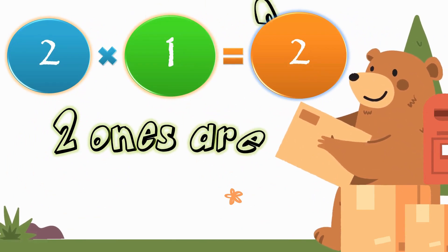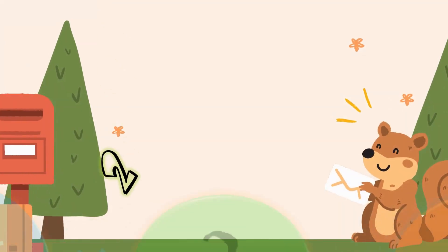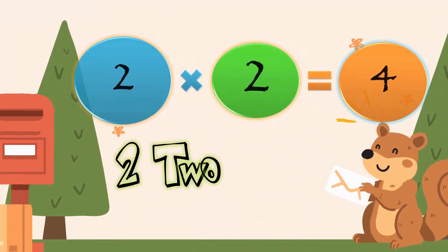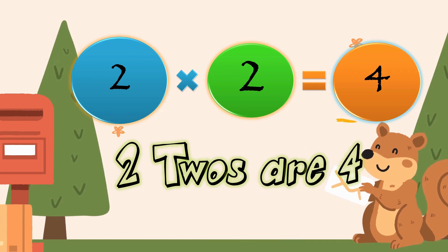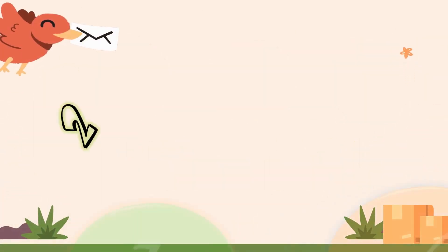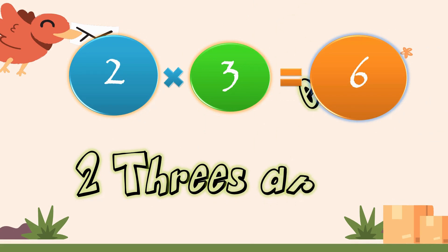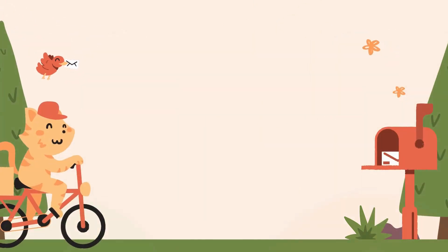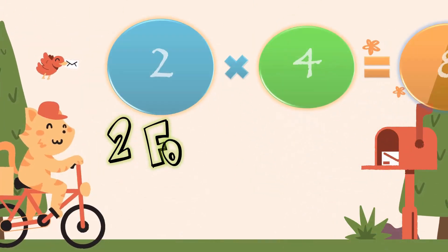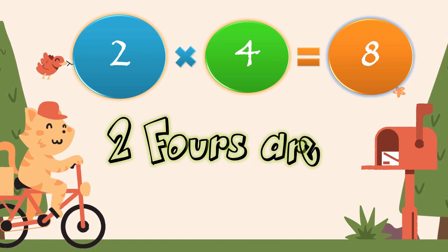Two ones are two. Two twos are four. Two threes are six. Two fours are eight.